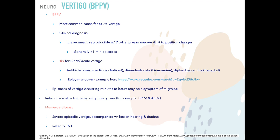Episodes of vertigo lasting minutes to hours may be a symptom of migraine — keep that in your differential. Meniere's disease is another example of peripheral vertigo. These patients have severe episodic vertigo accompanied by loss of hearing or tinnitus. If Meniere's disease is suspected, refer to ENT — this is not managed in primary care.